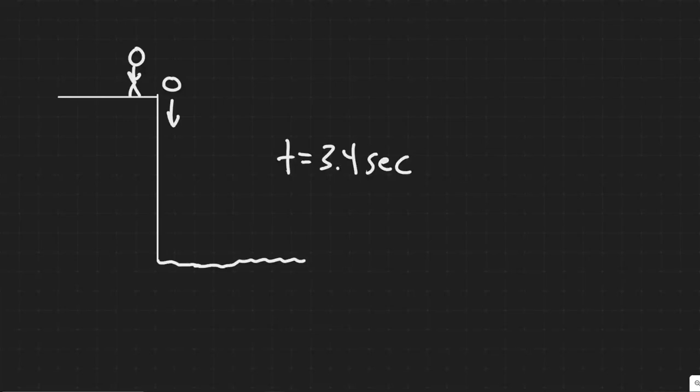In this problem, we're told a rock is dropped from a sea cliff and the sound of it striking the ocean is heard 3.4 seconds later. If the speed of sound is 340 meters per second, how high is the cliff?